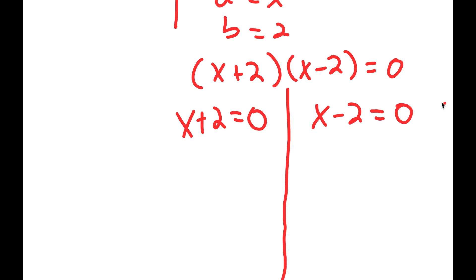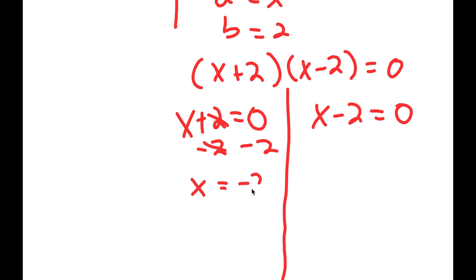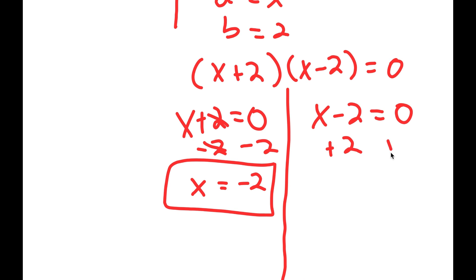These are fairly simple equations. For x plus 2 equals 0, I subtract 2 on both sides and I get x is equal to negative 2. For x minus 2 equals 0, I add 2 on both sides and I get x is equal to 2.